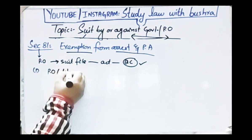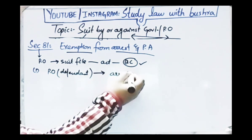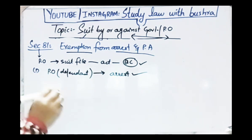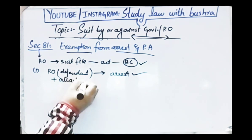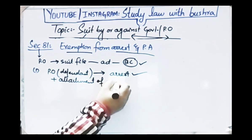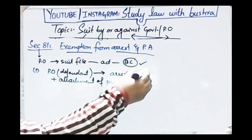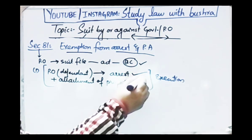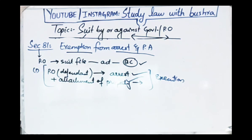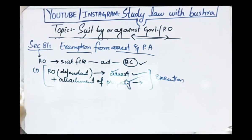The defendant — the public officer in this case — will not be arrested during the suit, and his property will not be attached during the suit. He is given exemption from these things. You cannot arrest him nor attach his property. However, further in this clause it is stated that if a decree is passed against this public officer, then during execution of the decree he can be arrested and his property can be attached — but during the suit itself he is exempt.